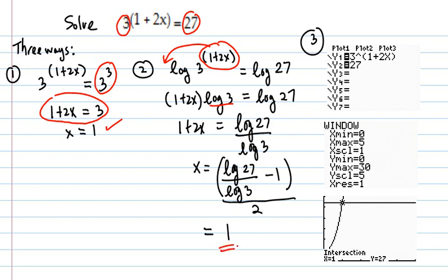Then the old standby, doing it with the graphing calculator. Put one side in for y1, the other side of the equation in for y2. Then you graph those two functions on some kind of decent window, find the intersection, and they do intersect at 1.